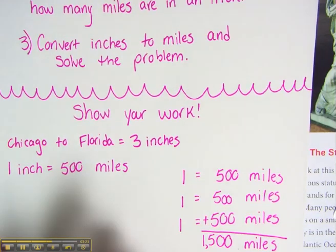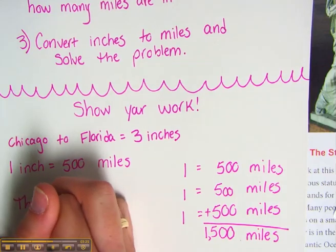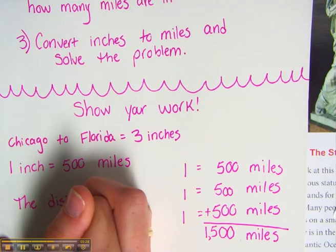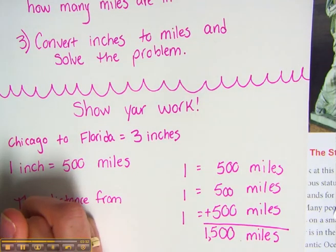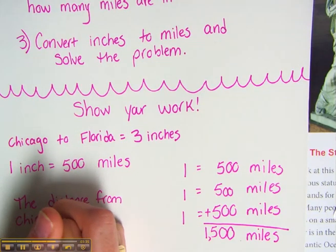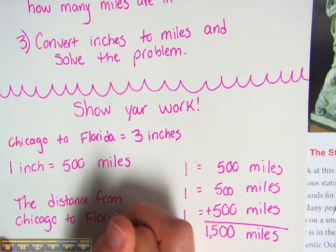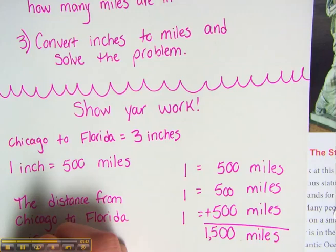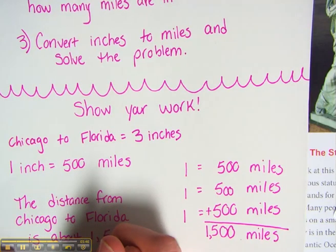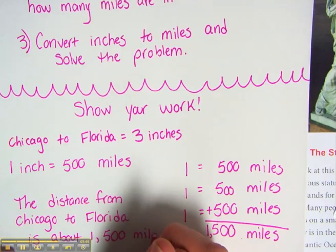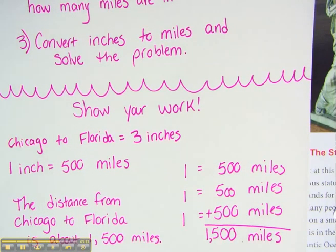The distance from Chicago to Florida is about 1,500 miles. If you have any more questions, please see your teacher.